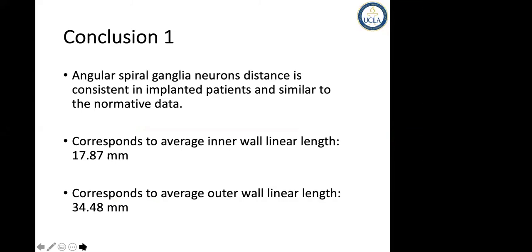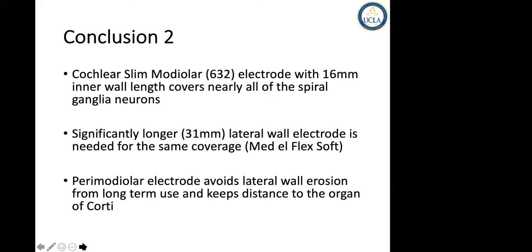The first conclusion is that the angular spiral ganglion neuron distance is consistent in implanted patients and similar to normative data. To cover the entire spiral ganglion neurons, you need 18 mm of inner wall linear length and 35 mm to cover using the outer wall electrode. The current Cochlear 632 slim modiolar electrode measuring 16 mm captures 90% of the linear length of the spiral ganglion neurons, and the counterpart MED-EL FLEX SOFT 31 mm captures the same coverage.